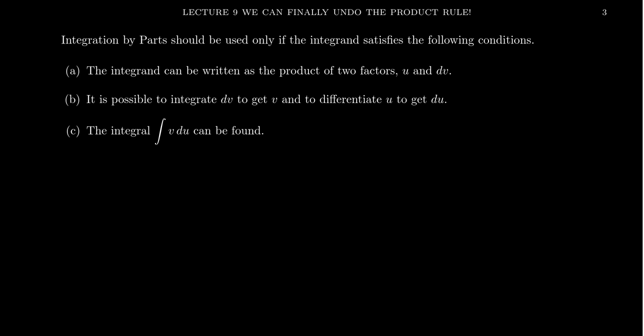Because there are some options on how one factors it, how do you choose u and how do you choose dv? Principle B: we have to be able to integrate dv. You can't choose dv to be something you can't integrate — that'll get you stuck. And we have to also differentiate u. So however you choose u and dv, we should be able to find the derivative of u and the anti-derivative of dv. If you're missing one of those pieces, integration by parts isn't going to get you any further.